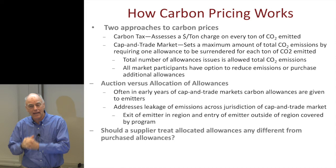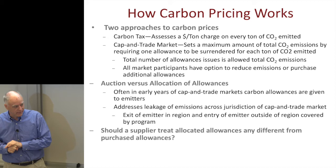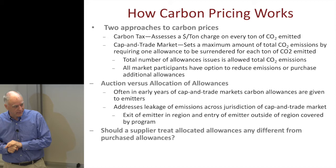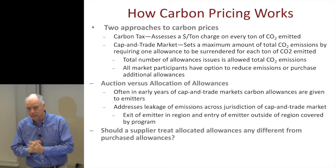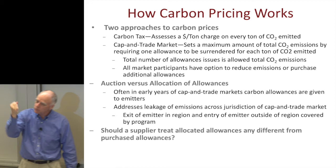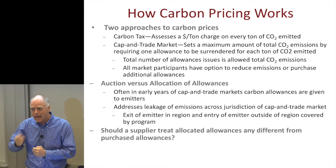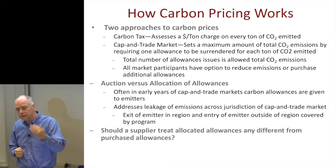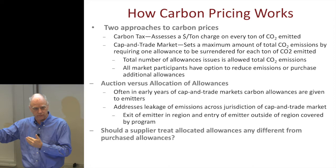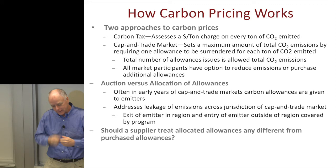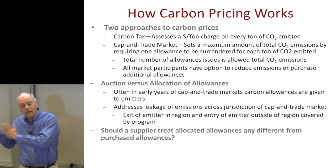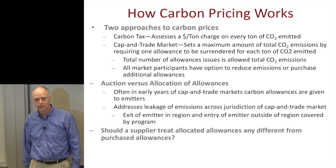In carbon markets, allowances can either be auctioned or allocated to market participants. Politicians often get confused here — they'll say that because you were given these allowances, you should just use them. But every time you use an allowance, you're giving up real money if the price of that allowance is positive, because you could have sold it to someone else instead. So regardless of whether allowances were allocated or purchased, they have the same value to you: the market price of the allowance.